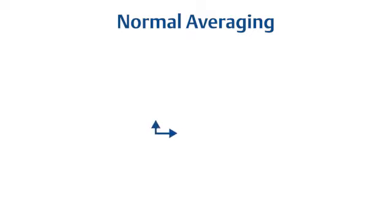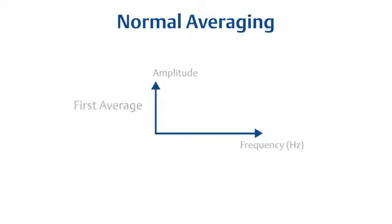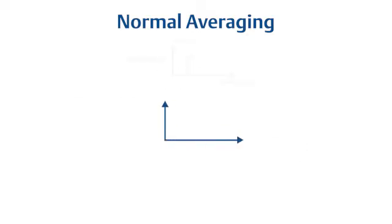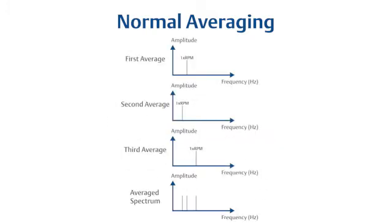Before we begin, let's review order tracking. Normally, vibration data is collected using spectrum averaging, which means that waveform data coming into the analyzer is used to calculate a spectrum. But the final spectrum created is actually an average of many spectra. This gives a good representation of the data and eliminates any random or one-time vibration sources. This does not, however, take into consideration variable speed.